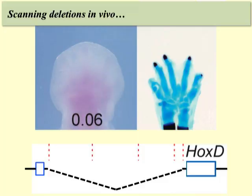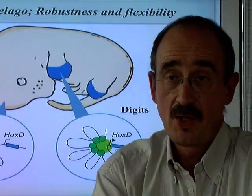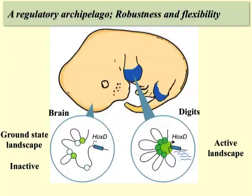We propose a model whereby, in inactive cells, the gene desert adopts a ground-state structure. In active cells, the addition of some factors leads to the formation of an active structure made out of several islands, each of them participating qualitatively or quantitatively to the final outcome. We call this a regulatory archipelago.